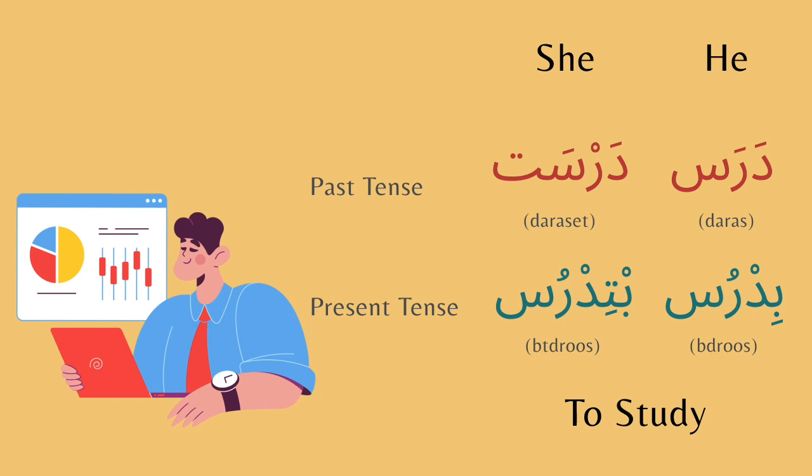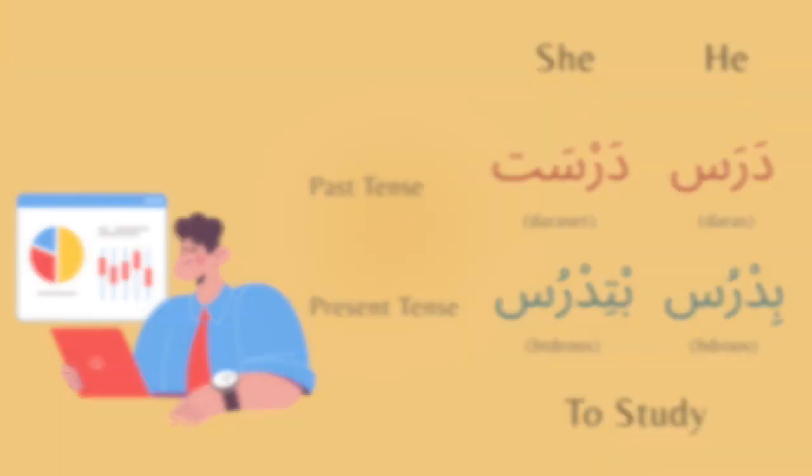And that is it for today, jamaaah — those are ten common verbs in Arabic in the Levantine dialect that you can use to boost your Levantine Arabic. Don't forget to subscribe for more Levantine Arabic learning content, and see you in the next video. Maas Salaamah.